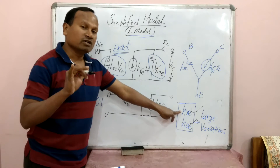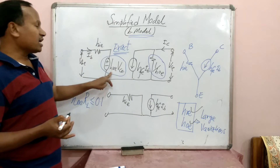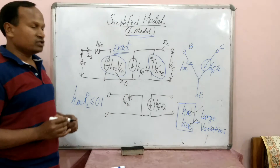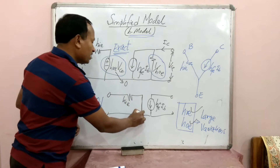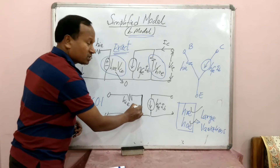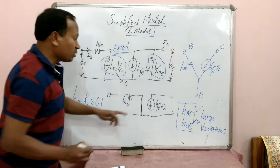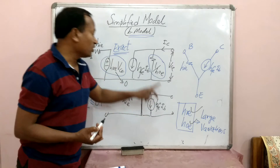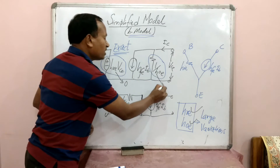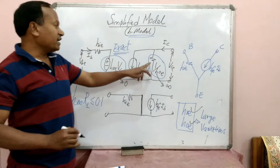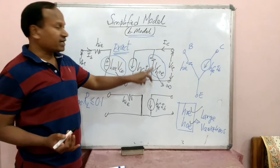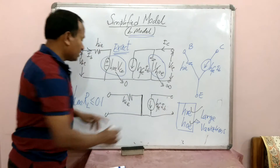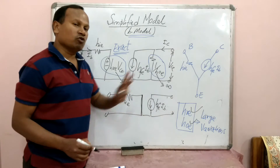Let us ignore HRE. If HRE is neglected, HRE·VCE will be approximately equal to zero. Zero voltage in an electrical equivalent circuit means it is replaced by a short circuit. Similarly, if HOE is negligible — if you ignore HOE — the impedance becomes infinite. And infinite impedance in an equivalent circuit means it becomes an open circuit.